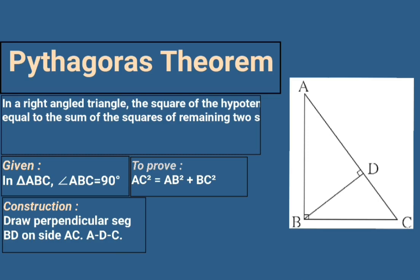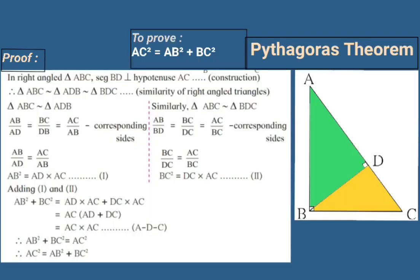Now we move to the proof. In a previous video, we learned a theorem about similarity in a right angle triangle: if the altitude is drawn to the hypotenuse, the two triangles formed are similar to each other and to the original triangle. Here in triangle ABC, right angled at B, segment BD is perpendicular to hypotenuse AC, dividing triangle ABC into triangle ADB and triangle BDC.